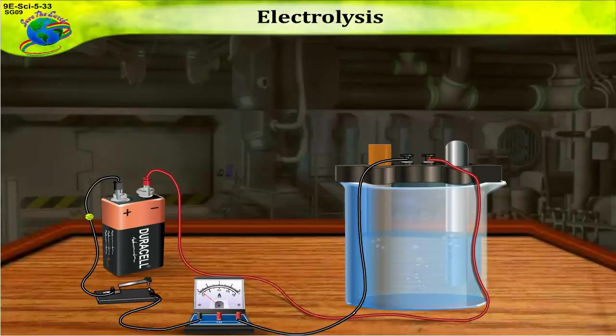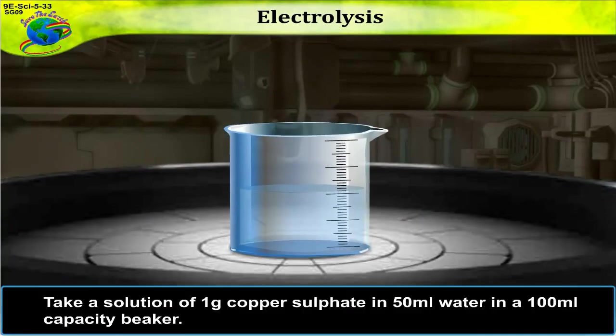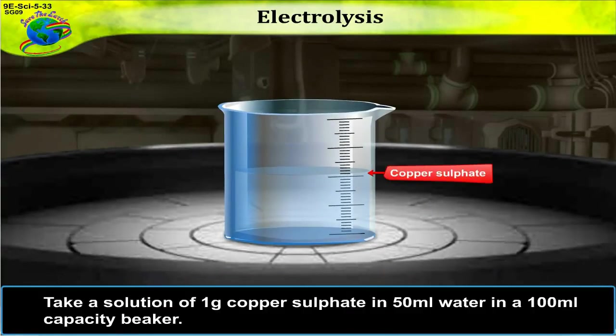Electrolysis. Try this activity. Procedure. Take a solution of 1 gram copper sulphate in 50 millilitres water in a 100 milliliter capacity beaker.